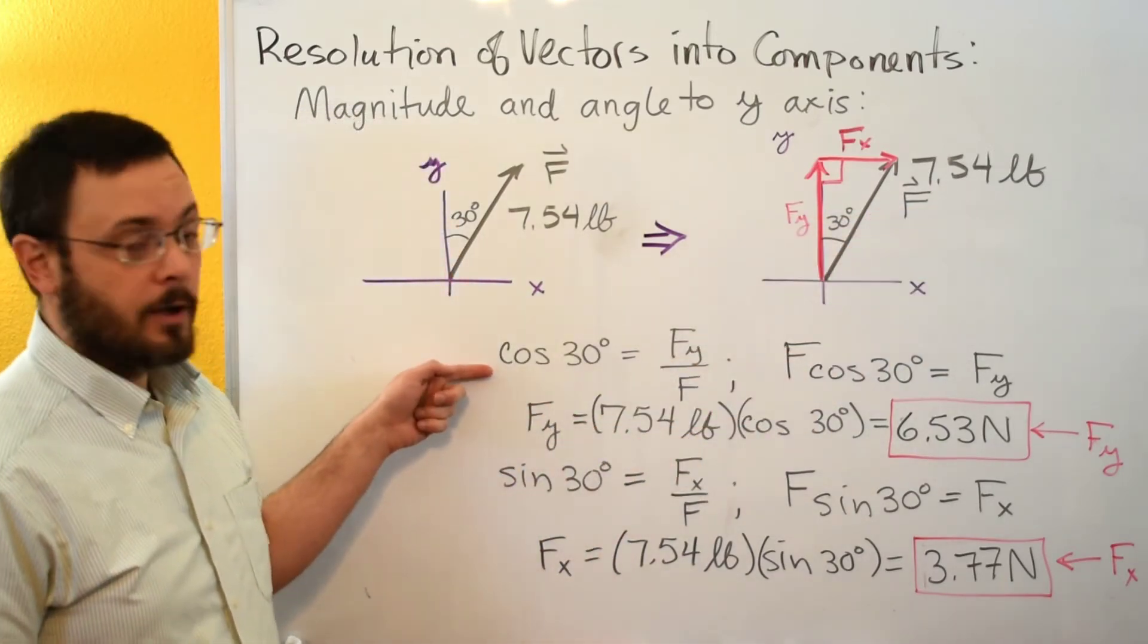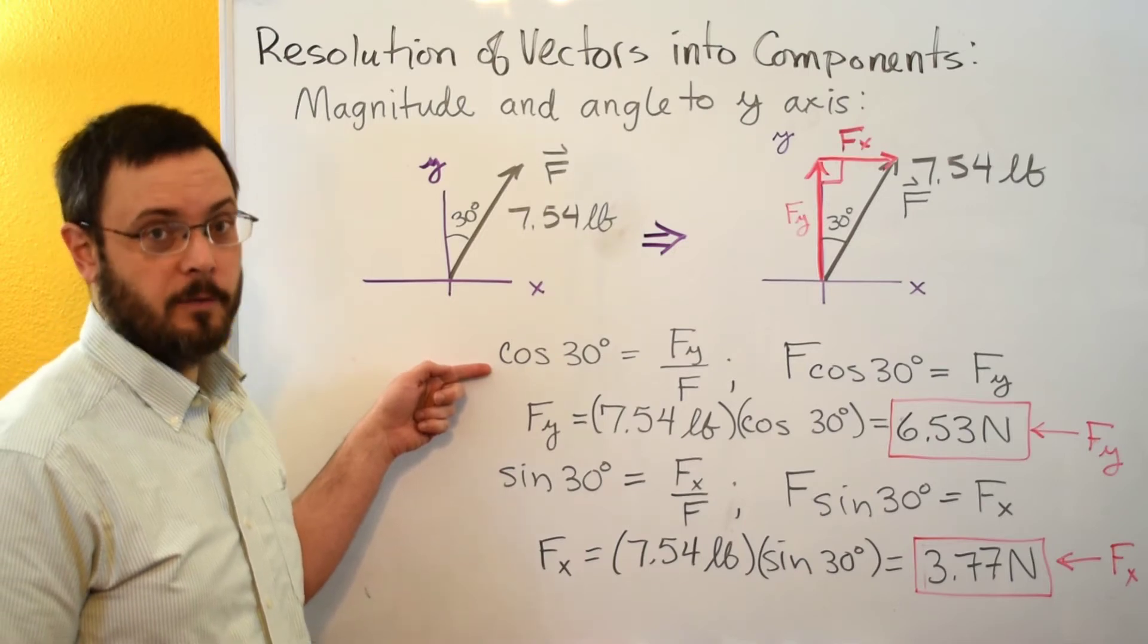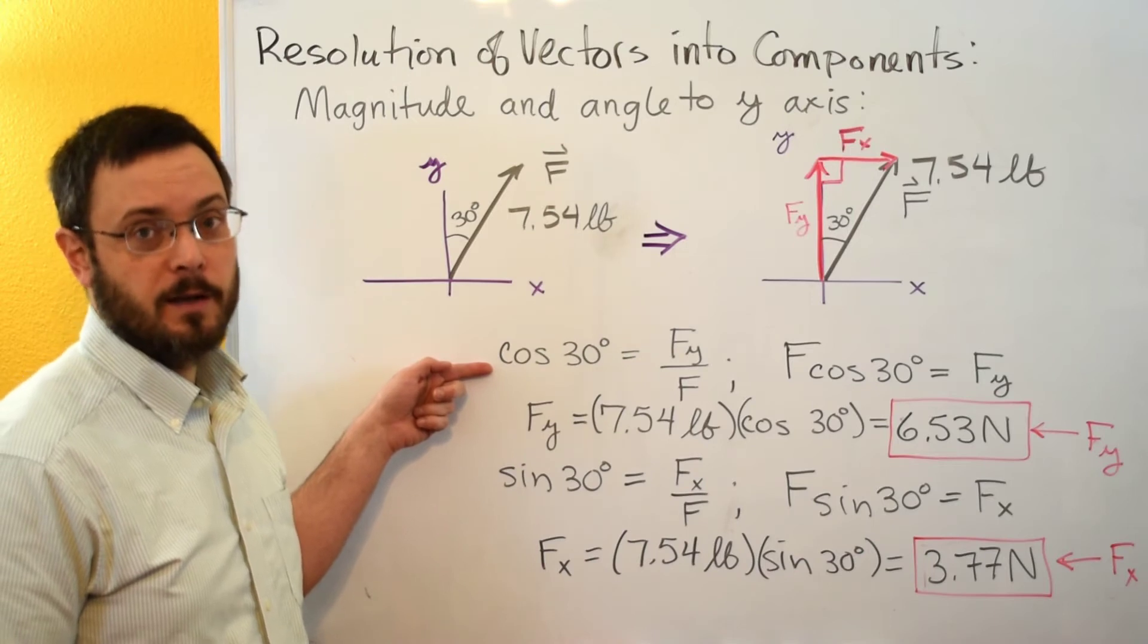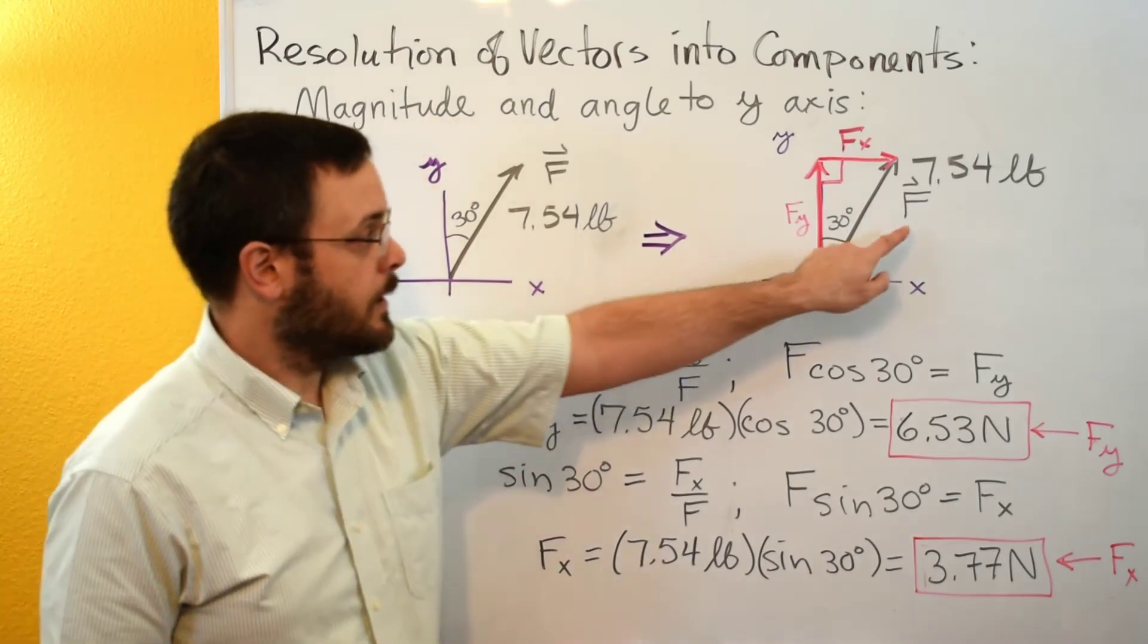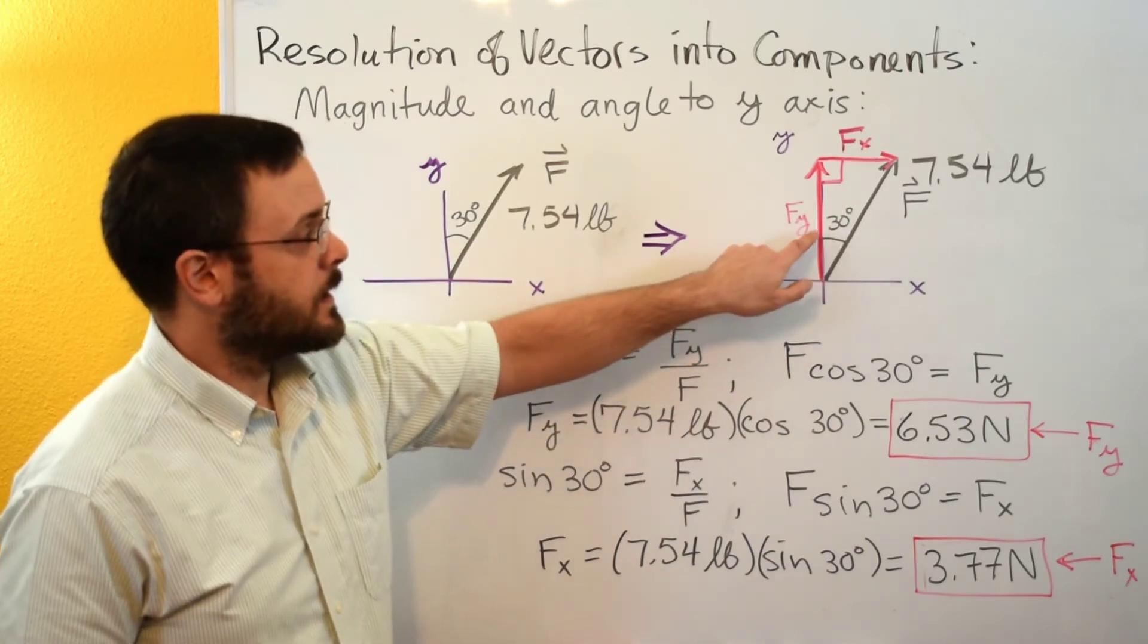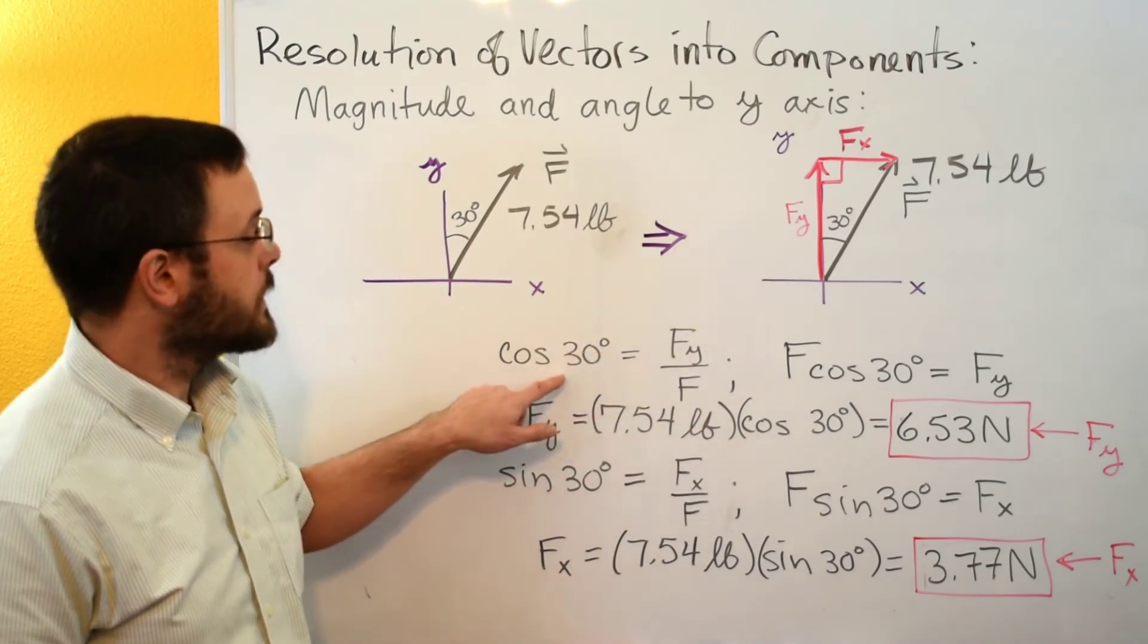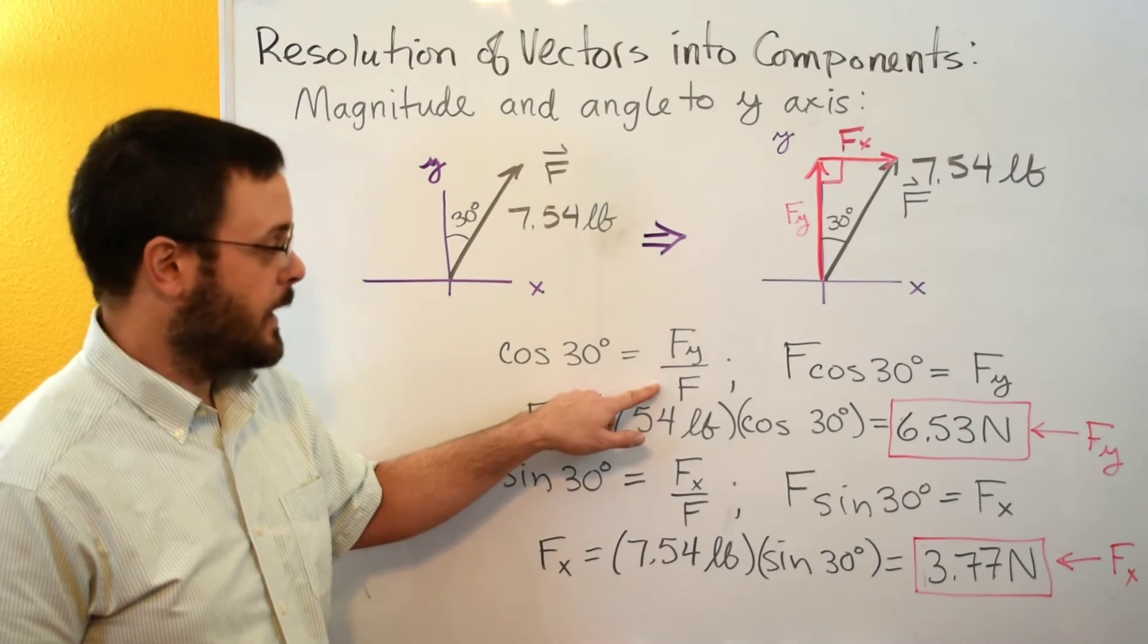So looking at our cosine, remember last time it was fx over the magnitude of f but cosine is always defined as the adjacent side over the hypotenuse. Our hypotenuse is still f but our adjacent side, that's the side the angle touches, is now fy. So cosine of 30 is now fy over f.